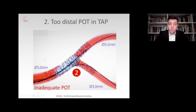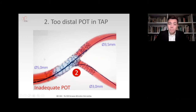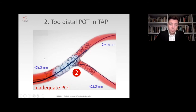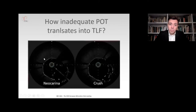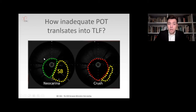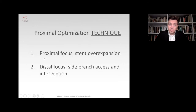Some colleagues argue that if we perform POT too distally, the consequence is carina shift, and carina shift may go away in a few days. Well, that is not always the case. You see here that if we perform too-distal POT, the consequence is unintended crush. You see here the near-carina appearance of correct POT, and this is what happens if POT is performed too distally — you get unintended crush as shown on the previous slide. This can, of course, translate to stent-related events.